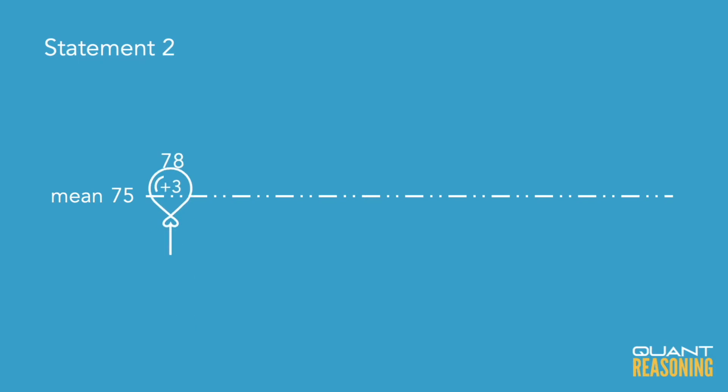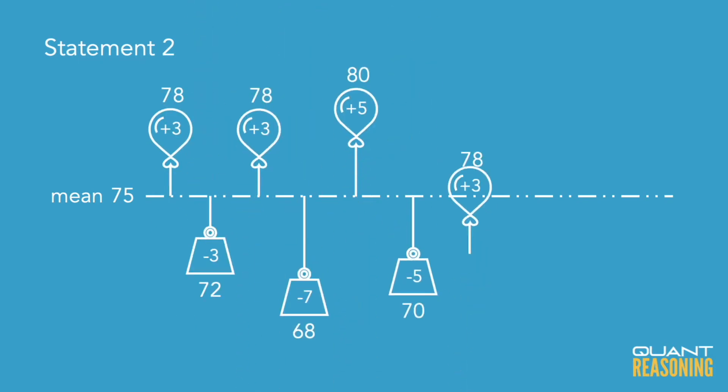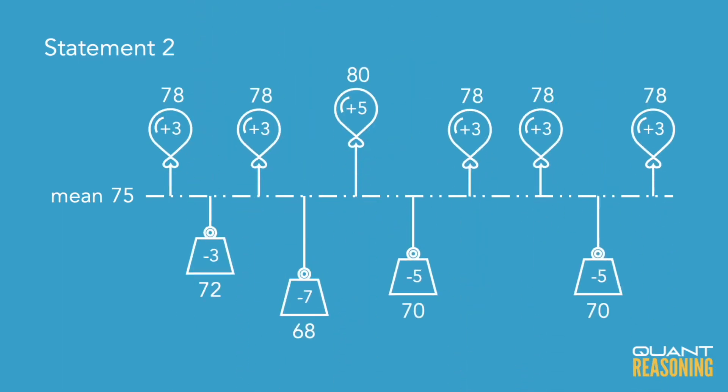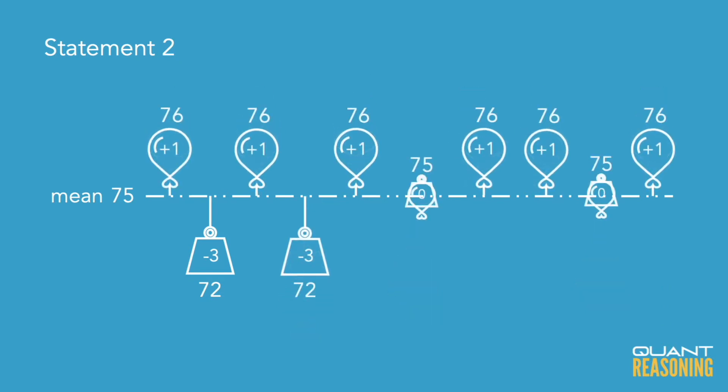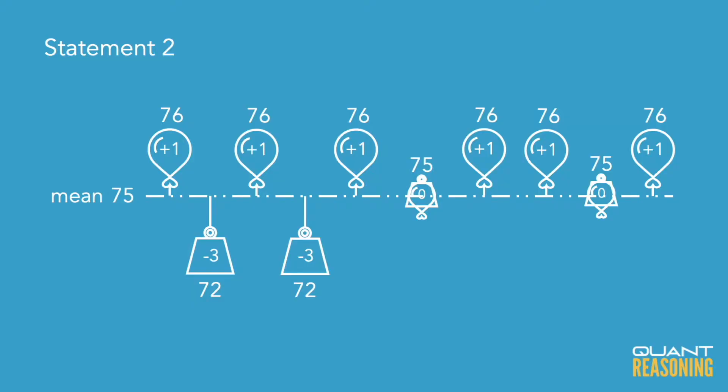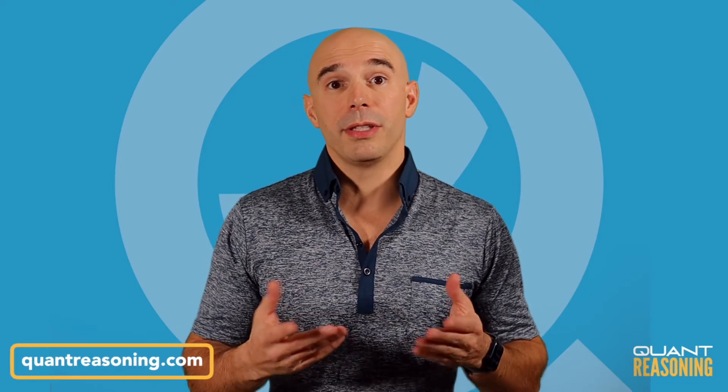Statement two gives us a standard deviation, which is really just a measurement of how spread out the data points are around 75. We can compare standard deviations — the data points would be more spread out if the standard deviation was 10 than they would be if the standard deviation was 5. That's an inference we need to be able to make on the GMAT, but telling us the exact value of the standard deviation without any basis for comparison is not very powerful. Without knowing where we are on the number line, we certainly can't find the biggest of the data points.